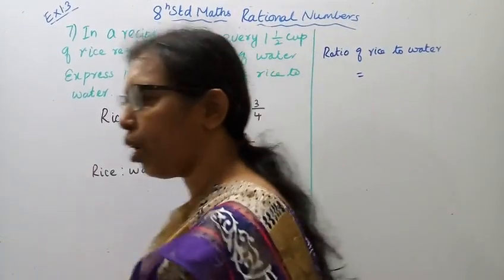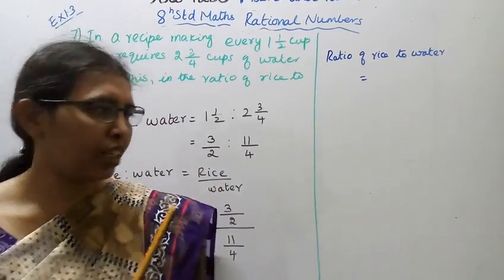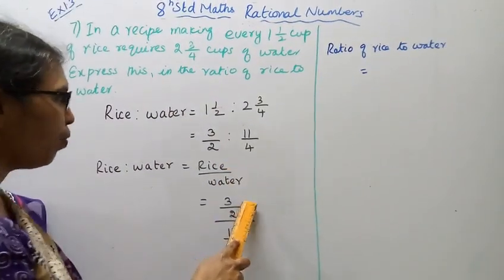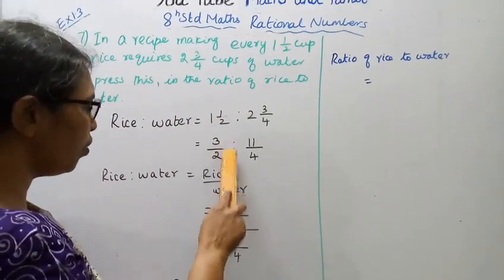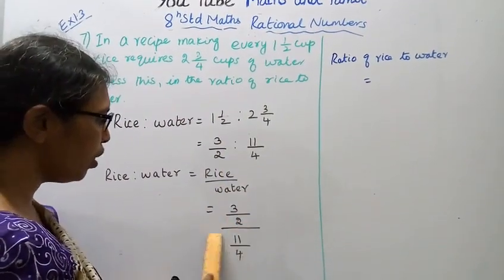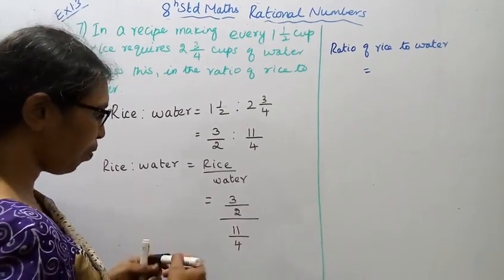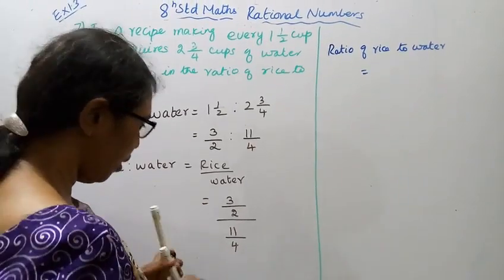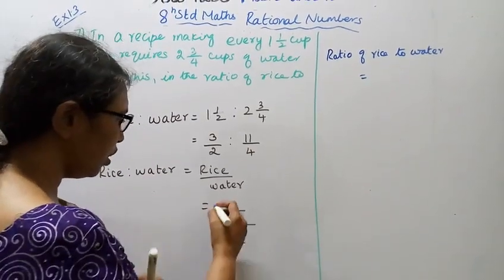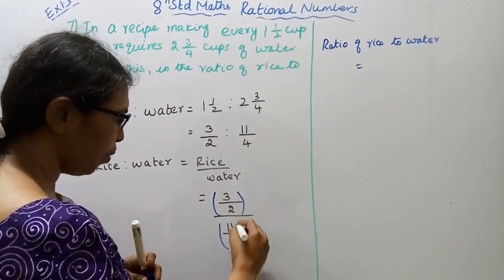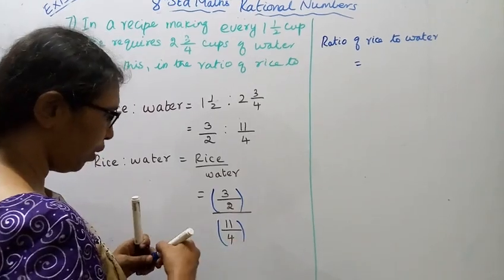Division. What do you mean by rice by water? Rice divided by water: 3/2 divided by 11/4.